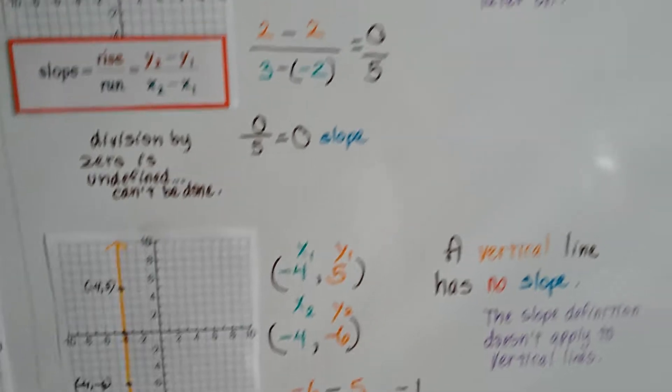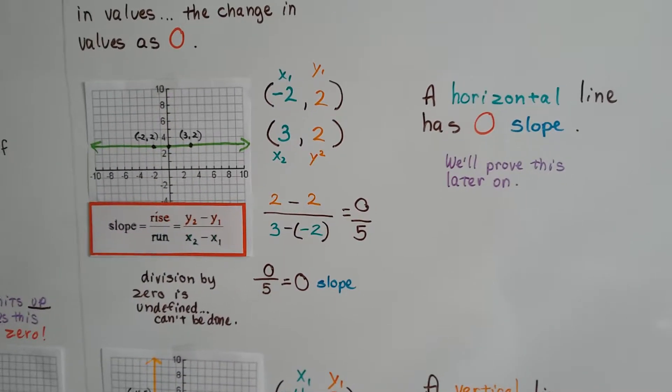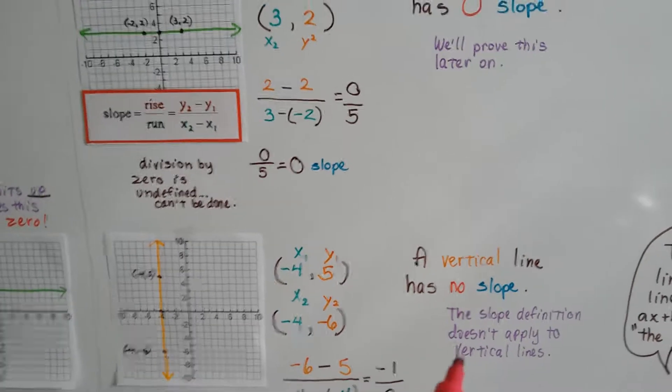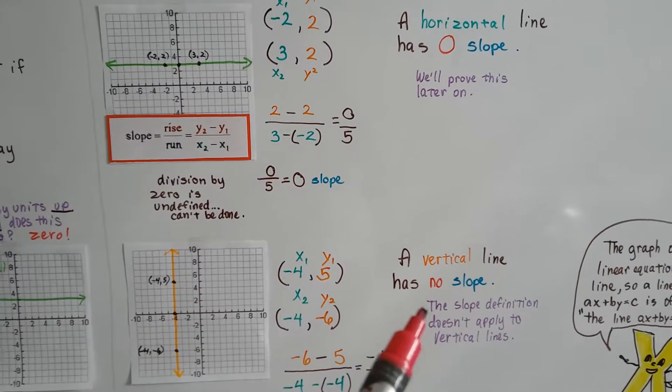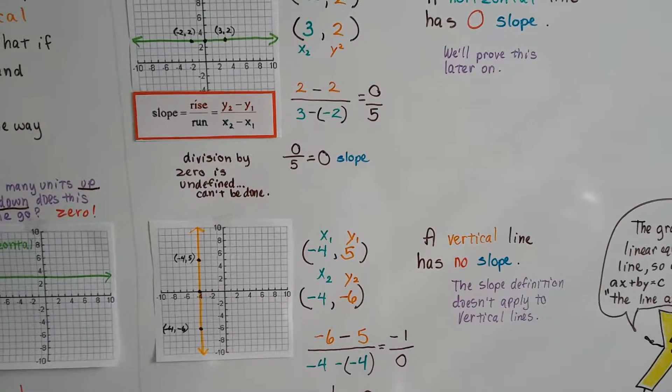So a horizontal line has zero slope, and we'll talk about that and prove that later on. A vertical line has no slope. So horizontal is zero, vertical is no slope. The slope definition doesn't apply to vertical lines.